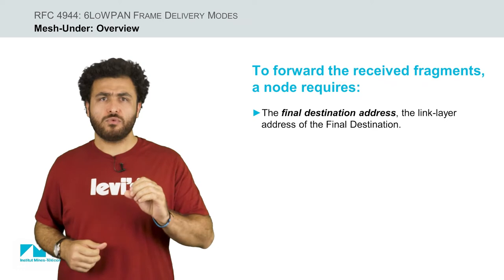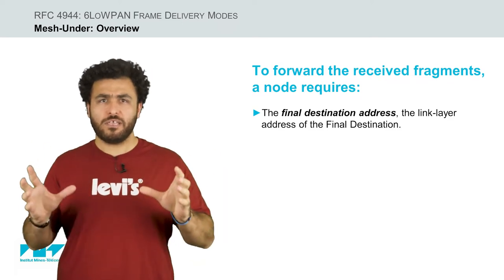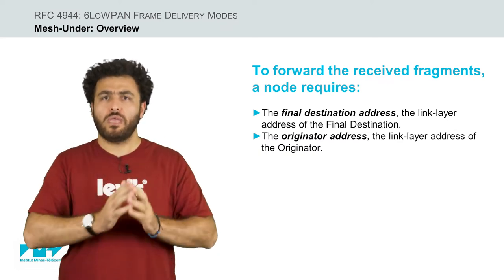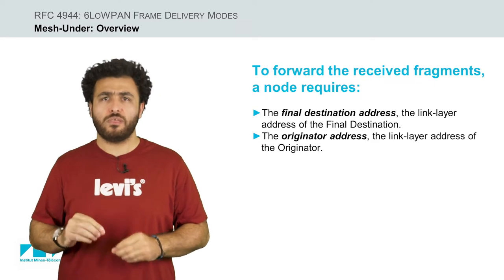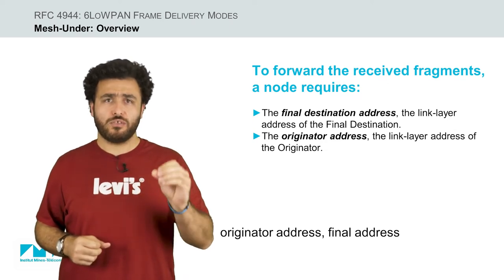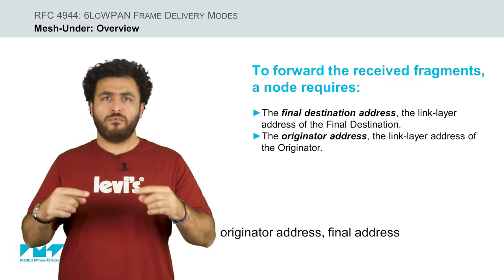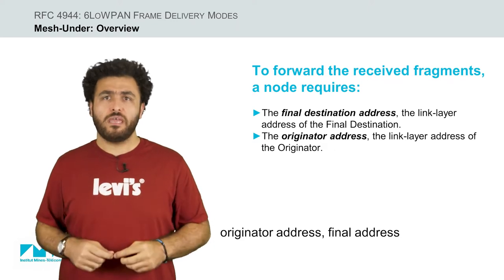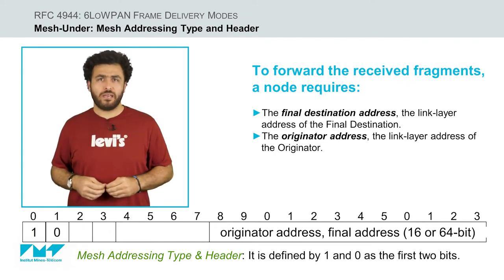To forward the received fragments to each destination in mesh under mode, the nodes require knowing the final destination address. Furthermore, in order to perform the reassembly operation — which is done only at the destination node and not at each intermediate one — the node requires knowing the address of the original source, the originator address. Considering that at each forwarding step the link layer destination and source addresses are overwritten by the addresses of the next hop and by the node performing the forwarding, this information regarding the final destination address and the originator address needs to be stored somewhere else. Towards this, 6LoWPAN defines the mesh header in RFC 4944.